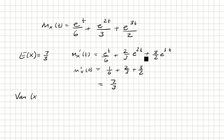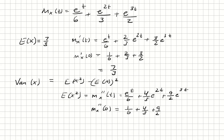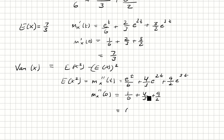Now we want to find the variance of x. For that we need the expected value of x squared, which requires the second derivative of the moment generating function. The second derivative is e^t over 6 plus 4/3 e^(2t) plus 9/2 e^(3t). Plugging in t=0 gives 1/6 plus 4/3 plus 9/2, which evaluates to 6. So the expected value of x squared is 6.